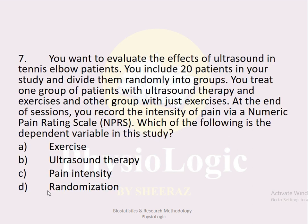MCQ number seven: You want to evaluate the effects of ultrasound in tennis elbow patients. You include 20 patients divided randomly into groups — one treated with ultrasound therapy and exercises, another with just exercises. You record pain intensity via a numeric pain rating scale. Which is the dependent variable? Options: a exercise, b ultrasound therapy, c pain intensity, d randomization. The correct option is c, pain intensity. The variable that causes an effect is the independent variable; the variable on which the effect occurs is the dependent variable. Here, ultrasound therapy is independent and pain intensity is dependent.